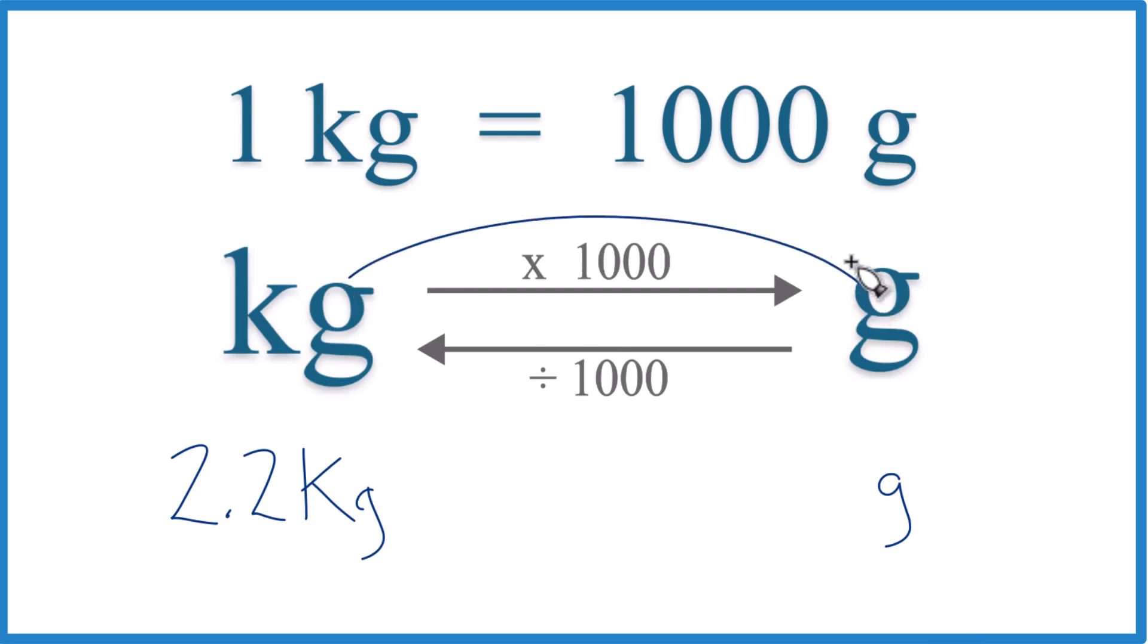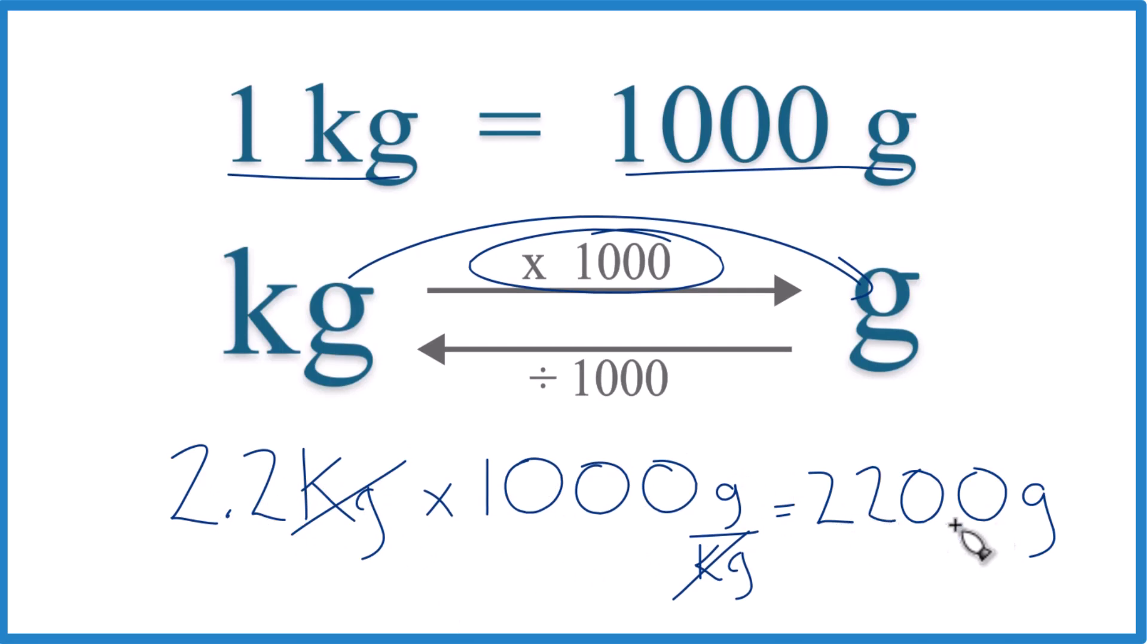Kilograms to grams, we multiply by a thousand. And that's a thousand grams in one kilogram, so grams per kilogram. That's important because now we have kilograms on the top and the bottom. They just cancel out. So 2.2 times a thousand equals 2,200 grams. And that makes sense. One kilogram is a thousand, over two kilograms should be over 2,000. And that's what we got.